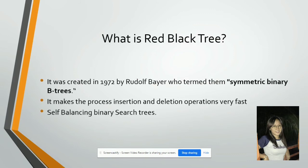What is a red-black tree? It was created in 1972 by Rudolf Bayer, who termed them symmetric binary B-trees. Red-black trees make the process insertion and deletion operations very fast. They are self-balancing binary search trees.